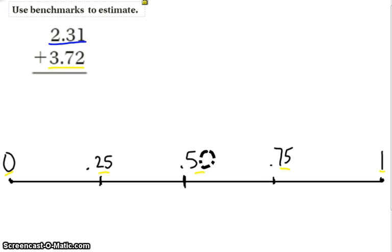So now what I do is I look at my first number, 2 and 31 hundredths, and specifically I look at the decimal portion, 31 hundredths, and I identify where that would be on my number line.